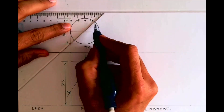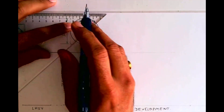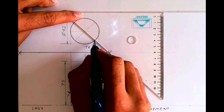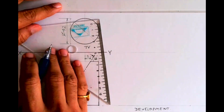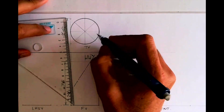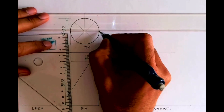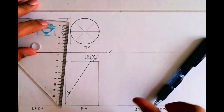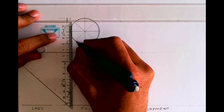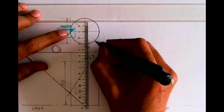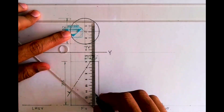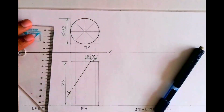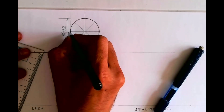First we'll divide the circle into eight parts. We are dividing the circle into eight parts because we need generators. Since this is a cylinder, we don't have any points, so we need to divide it into eight or twelve parts.